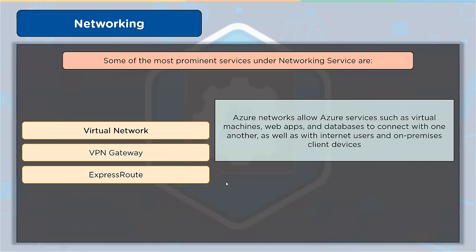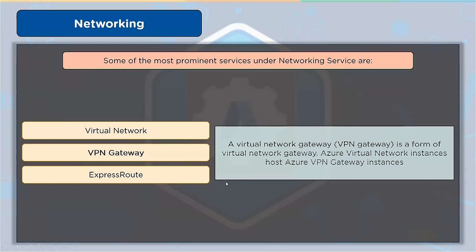A VPN gateway is a form of virtual network gateway installed in Azure virtual network instances. It provides connectivity for services such as a site-to-site connection that connects on-premises data centers to virtual networks, a point-to-site link that connects individual devices to virtual networks, and a network-to-network connection that connects virtual networks to other virtual networks.